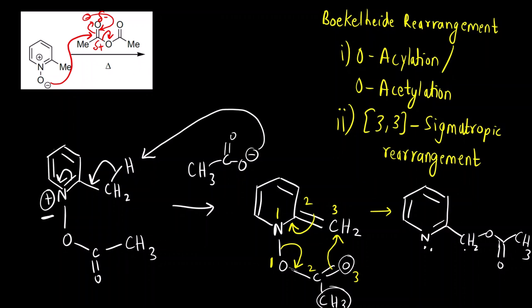So, this is the final product: pyridine and at the second position we have CH2 and then acetate group. This is the final product.